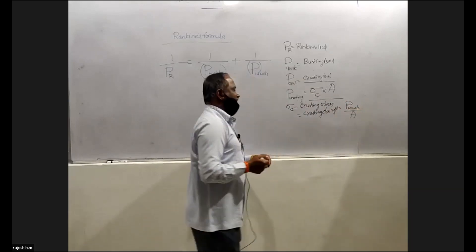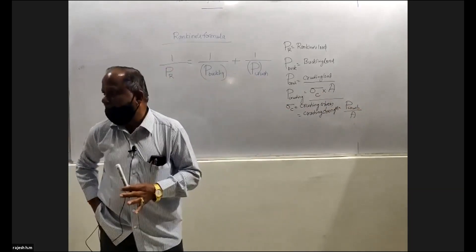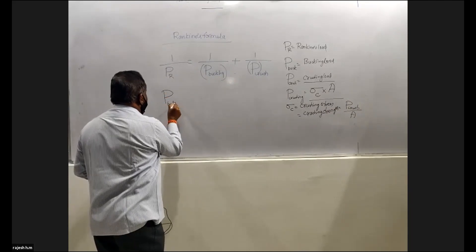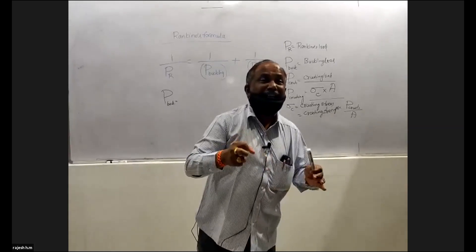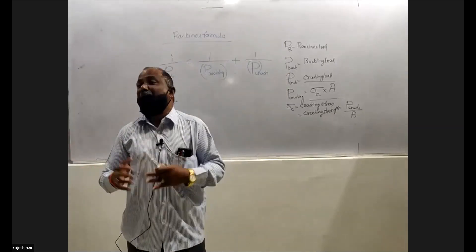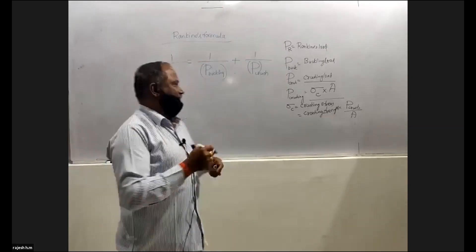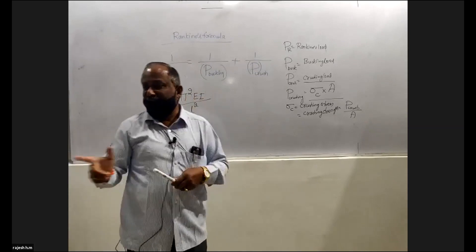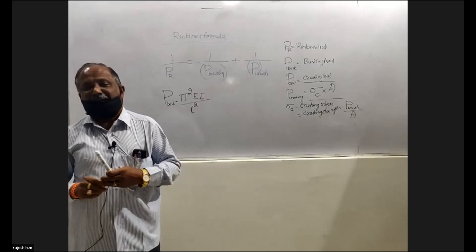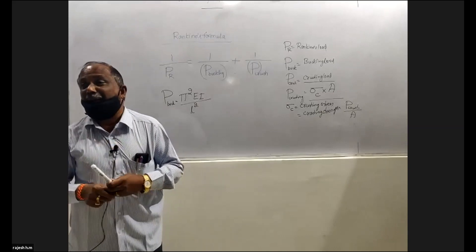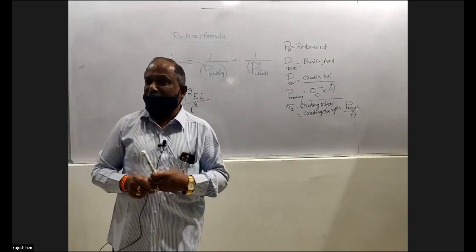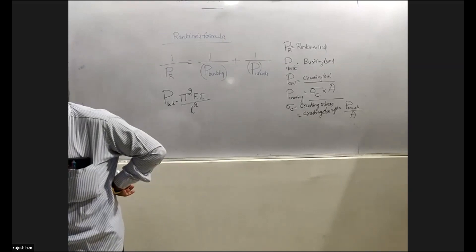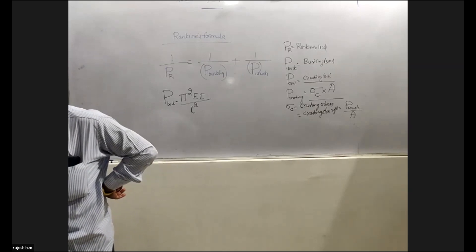Now you know the formula for P_buckling. You have to remember the formula: pi squared EI divided by L squared. That is the formula for buckling load. Check the formula — pi squared EI by L squared. That is the Euler's formula for buckling load, where L is the effective length minimum.